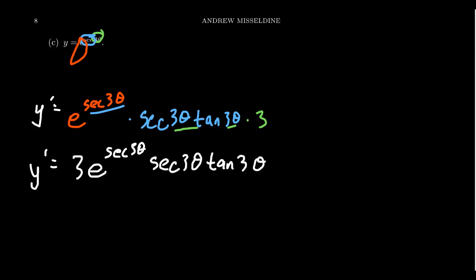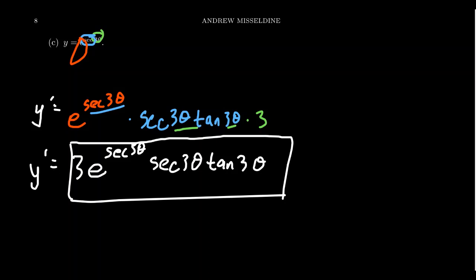Not all of these nested chains are going to be as messy as the previous example, but the principle is the same. If we take the derivative one step at a time — the outer derivative, then the inner derivative, then the next inner derivative — all the way until we reach the very middle of the function, the chocolate center of our Tootsie Pop, then we'll have the derivative as calculated by the chain rule.